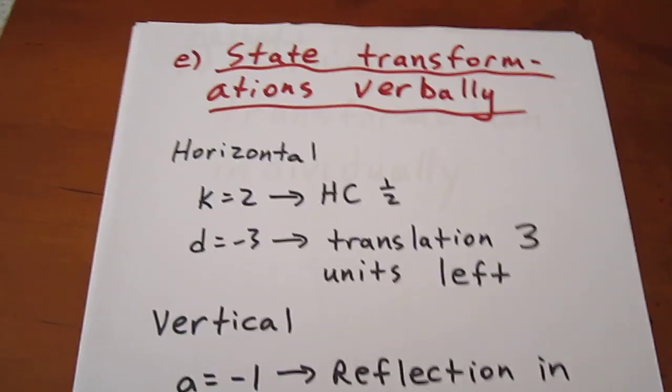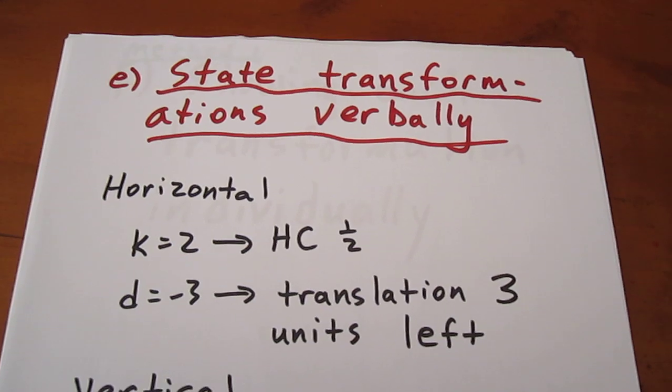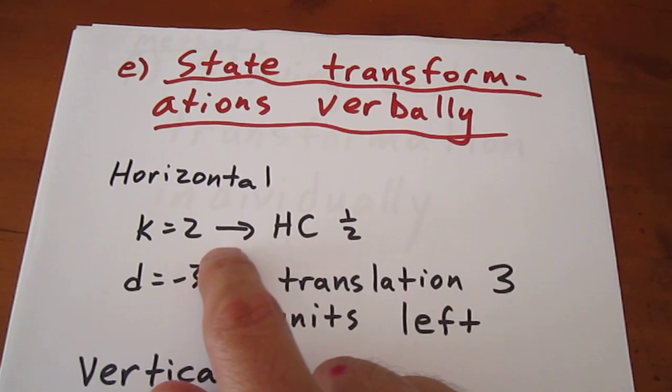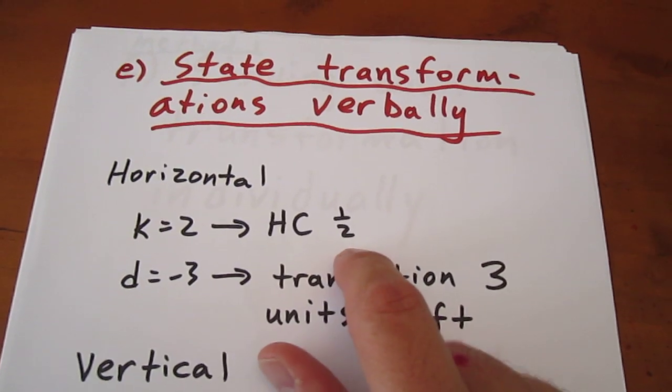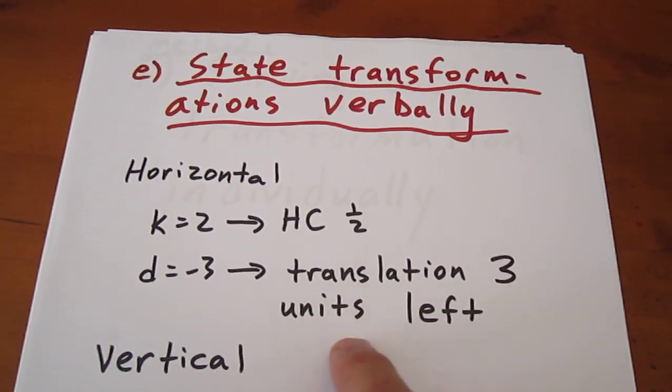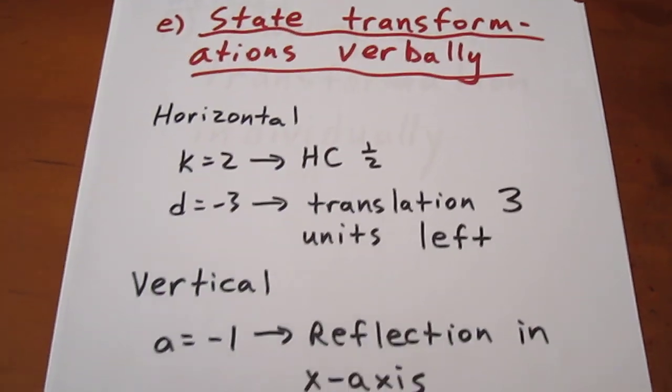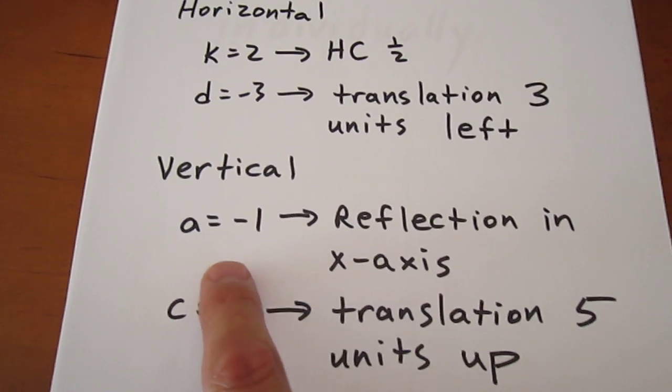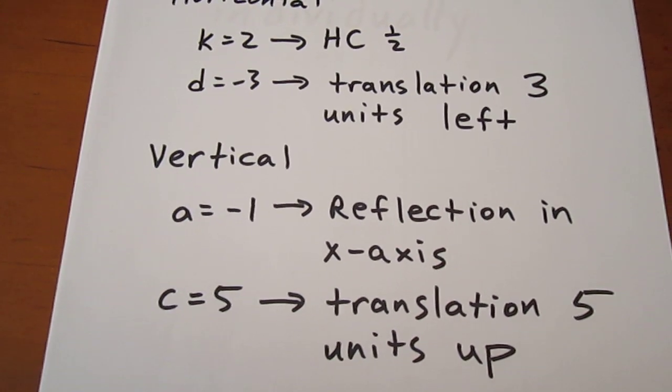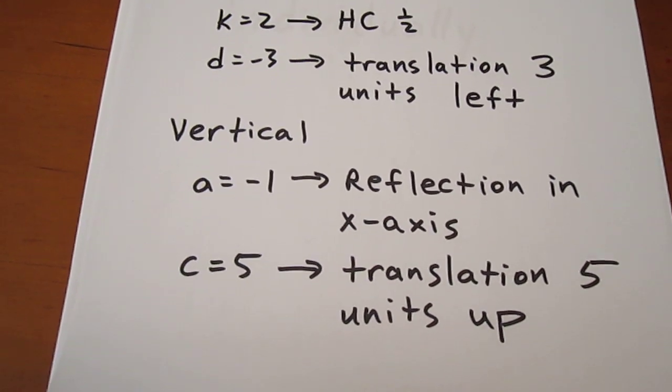So then we can state the transformations verbally. The horizontal transformations are given by the k and the d. Since k is 2, we have a horizontal compression by a factor of a half. And since d is negative 3, we have a translation 3 units left. With respect to the vertical, since a is negative 1, we have a reflection in the x-axis. And since c is 5, we have a translation 5 units up.